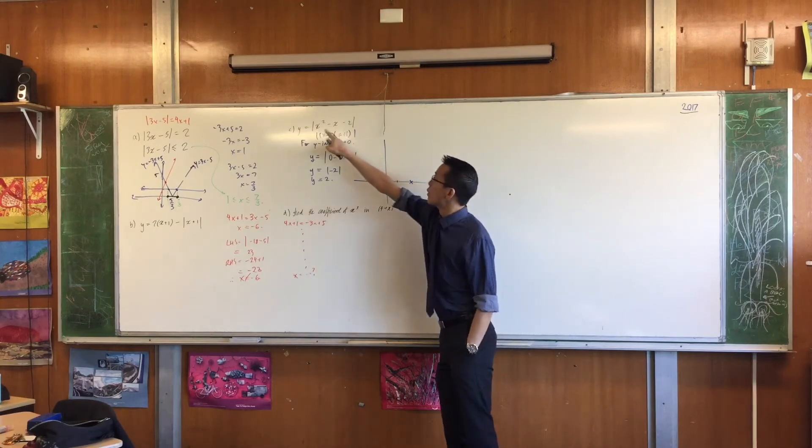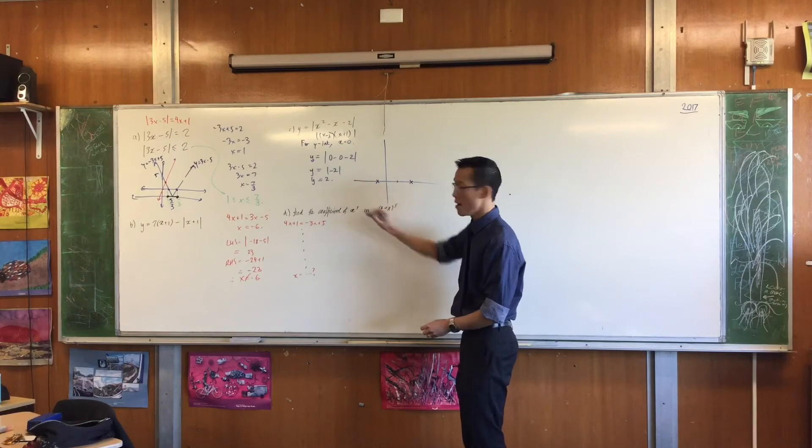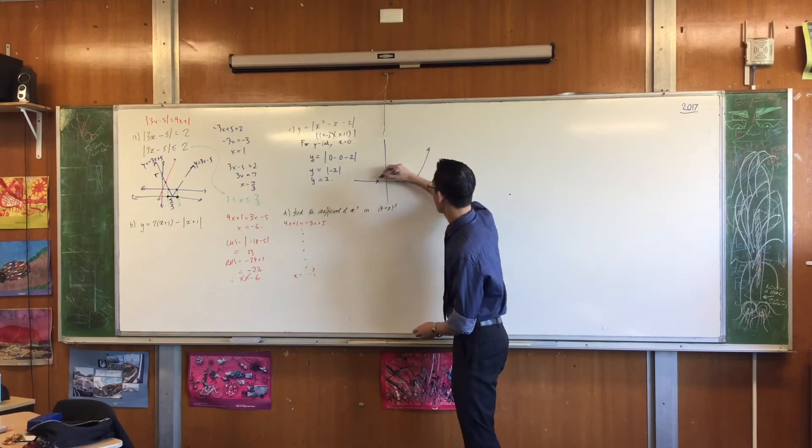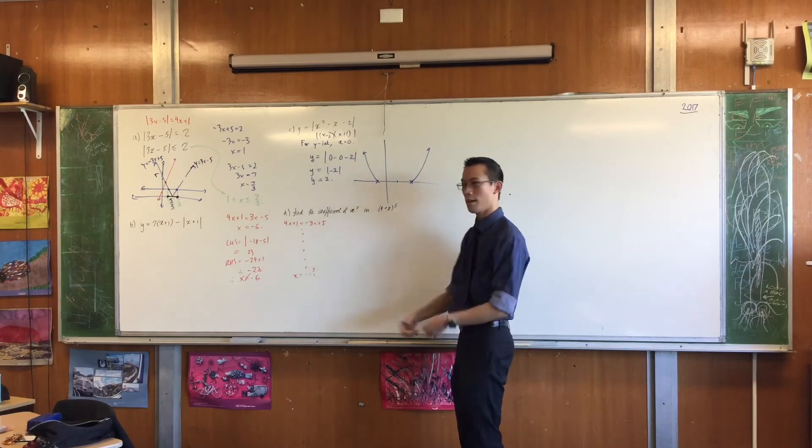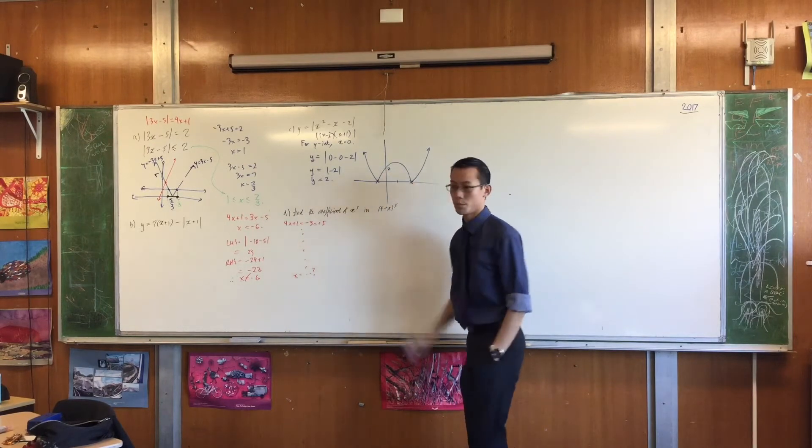Now, ordinarily, I would say this guy's concave up, so it's going to be this happy parabola, but I know that even though this part and this part are okay, this part down here, the absolute value will apply, and it goes, whoop, and there's your 2, okay?